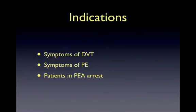Indications for performing point-of-care DVT ultrasound include patients presenting with symptoms of DVT — leg swelling, erythema, pain, tenderness, warmth, and prominent superficial veins. Patients presenting with symptoms of pulmonary embolism include difficulty breathing, hypoxia, tachycardia, chest pain, hemoptysis, syncope, hypotension, and patients in PEA arrest where you're assessing the patient for a cause.